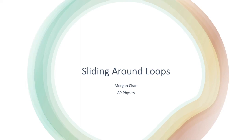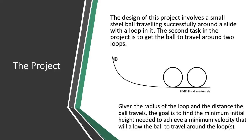I did my presentation on sliding around loops. The design of the project was a small steel ball with a quarter-inch diameter traveling around a slide with a loop in it. The second part of my project was to get it to go around two loops, and the slide I used was a vinyl tube.